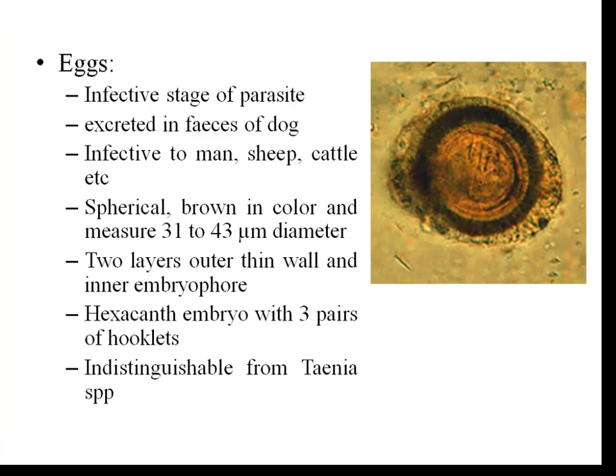Eggs are the infective stage of the parasite, excreted in the feces of the dog. They are infective to herbivorous animals as well as man. The eggs are spherical in shape, measuring around 30 to 40 micrometres in diameter. They have two layers: the outer thin wall and an inner embryophore, which covers a hexacanth embryo — called hexacanth because it has three pairs of hooklets inside. The eggs of Echinococcus granulosus cannot be differentiated from eggs of other Taenia species.